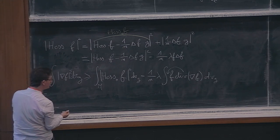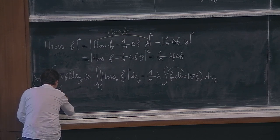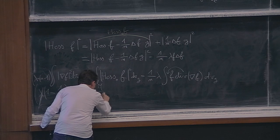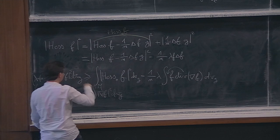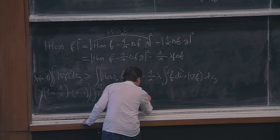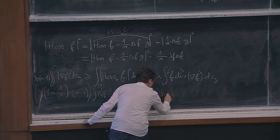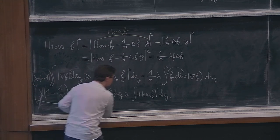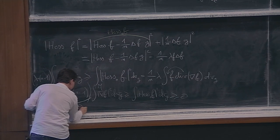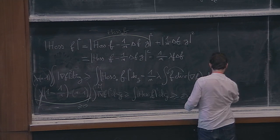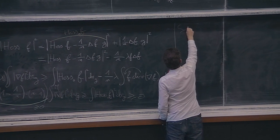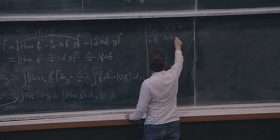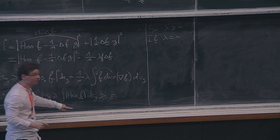So λ(1 − 1/n) − (n−1) ≥ 0, which gives λ ≥ n. If λ = n, then the trace-free part of the Hessian must be zero, so Hess f + f·g = 0.